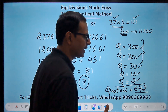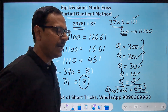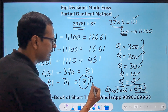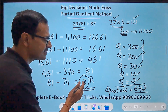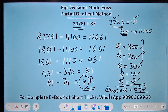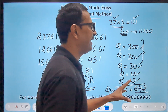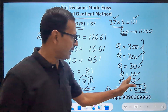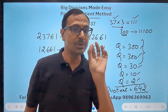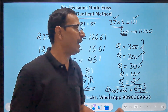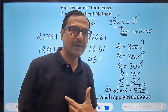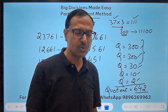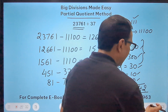You can pick up the calculator and check: the quotient is 642 and the remainder is 7. The method works wonderfully well. You need to take the partial quotient which suits you — do whatever is most convenient for you.